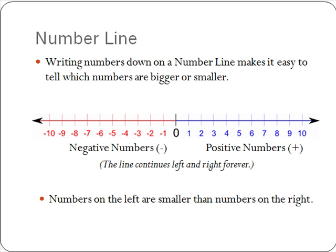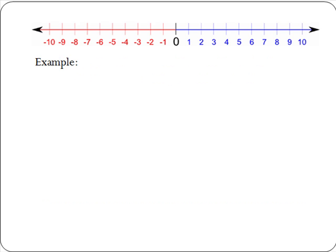Let's look at some examples of simple inequalities, starting with greater than. If we take the numbers 3 and 8, we know that 8 is greater than 3. We can write this as 8 is greater than 3. Notice how 3 is further left on the number line than 8. Another example: if we take minus 1 and plus 1, then 1 is of course greater than minus 1, so we write 1 is greater than minus 1. See how the smaller number is further left on the number line.